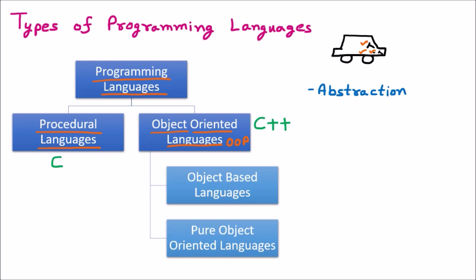So that is the concept called abstraction. Abstraction means we give the user only the information that is required — variables are hidden, and only commands are exposed to the user. This is the first real-life concept required in object-oriented programming.